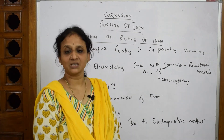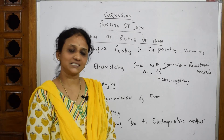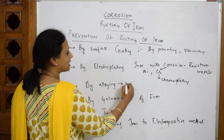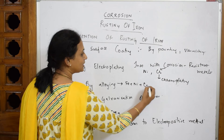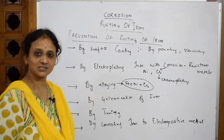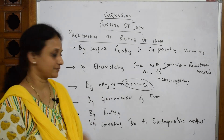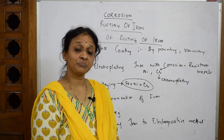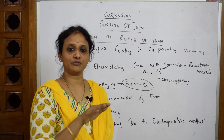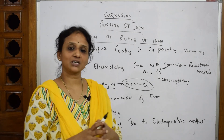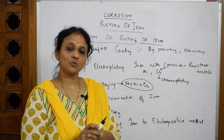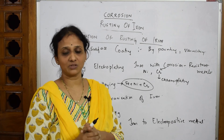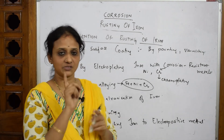Another method is alloying — mixing two or more metals. Since nickel and chromium are less corrosive, we can mix iron with nickel and chromium to form an alloy like stainless steel, so it doesn't rust. Next is galvanization: this is a process of plating a surface layer of zinc on the surface of iron. Zinc is more electropositive than iron, which is the key reason for choosing it.